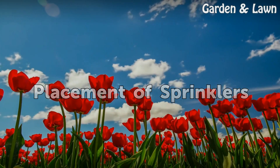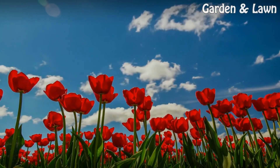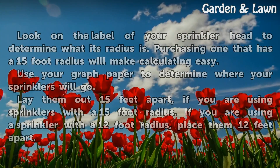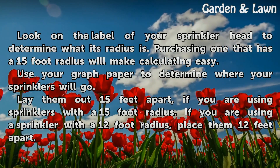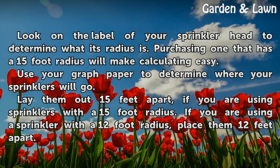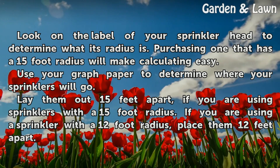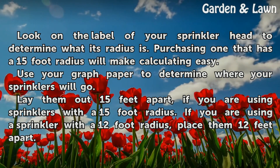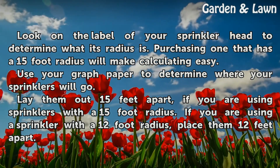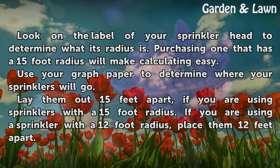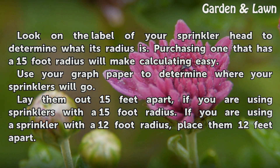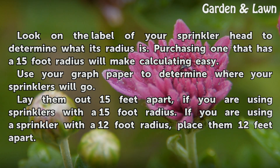Placement of Sprinklers. Look on the label of your sprinkler head to determine what its radius is. Purchasing one that has a 15-foot radius will make calculating easy. Use your graph paper to determine where your sprinklers will go, and lay them out 15 feet apart if you are using sprinklers with a 15-foot radius.